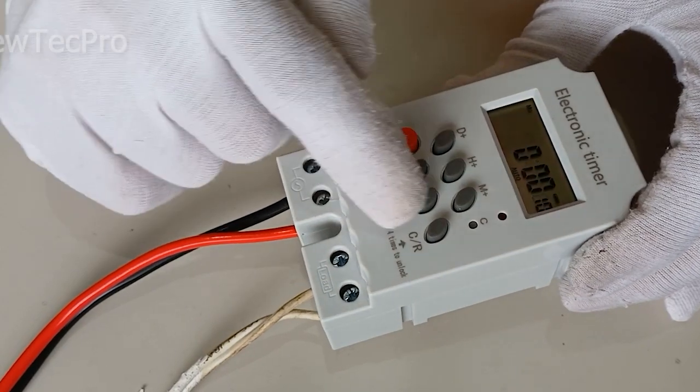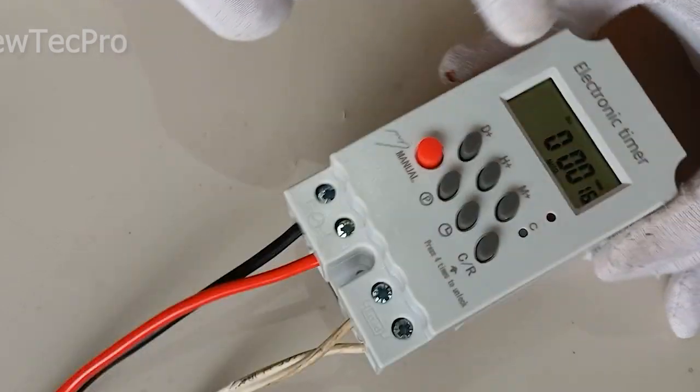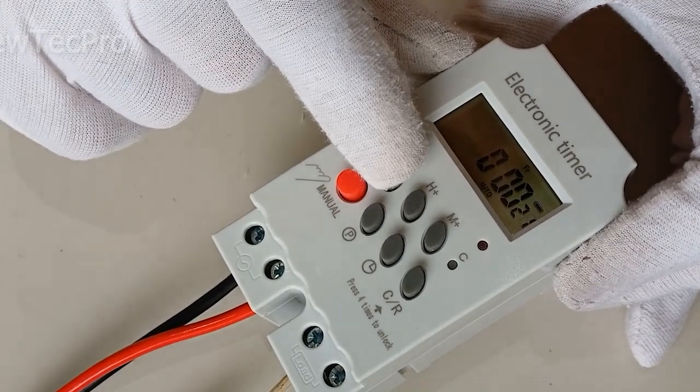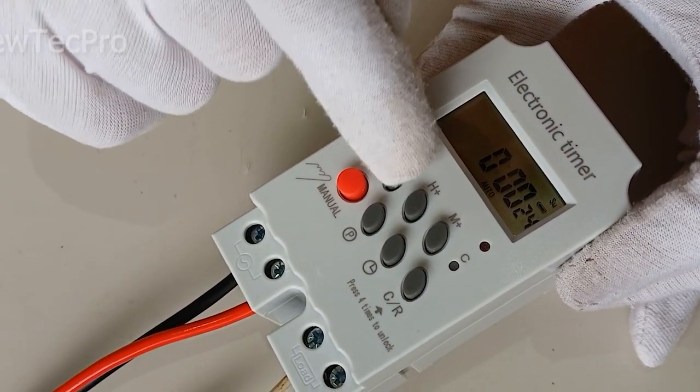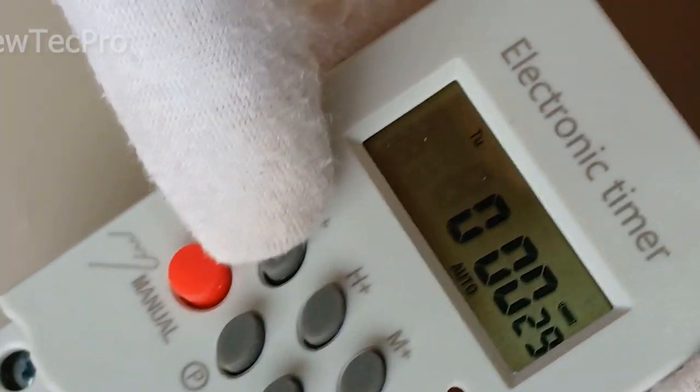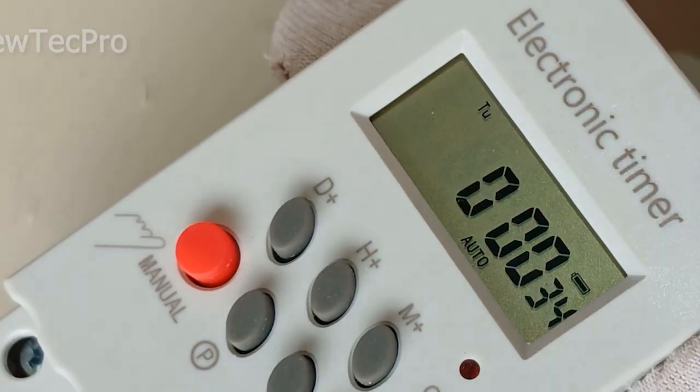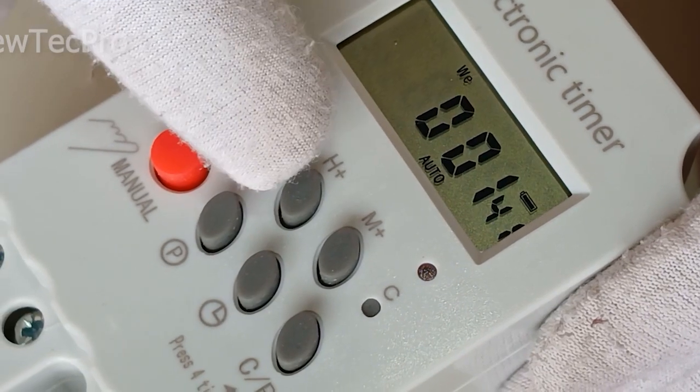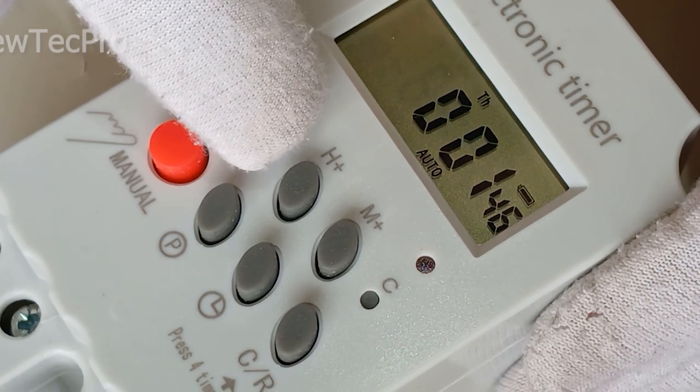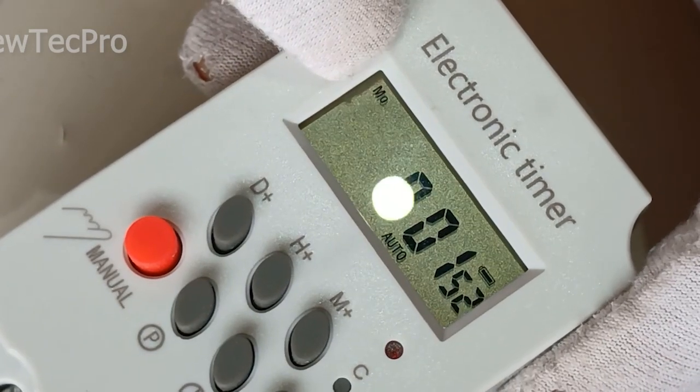For change day, press D plus. As you can see, change day: Wednesday, Tuesday, Friday, Sunday, Monday. Here you can see change. Today is Monday, so I'll set it to Monday. As you can see, Monday M-O.